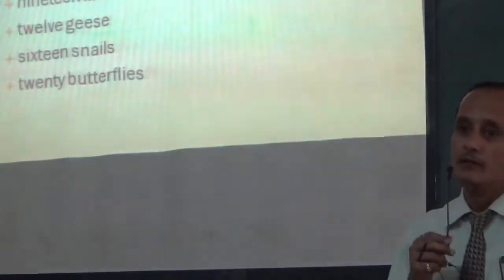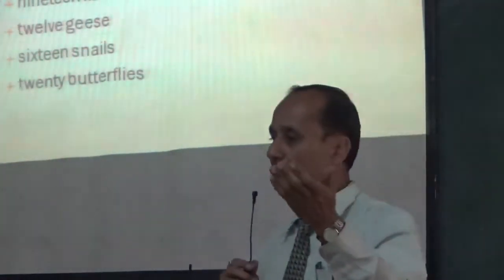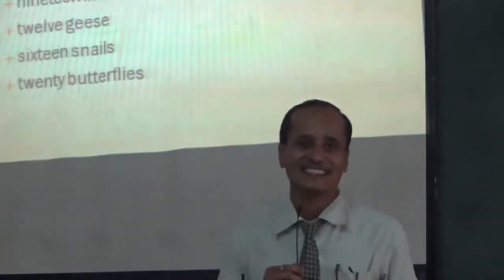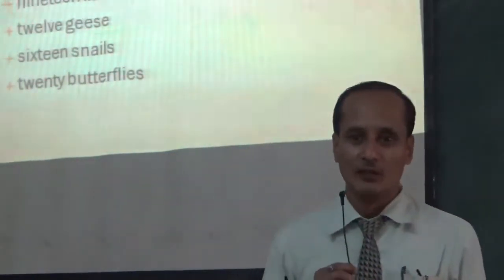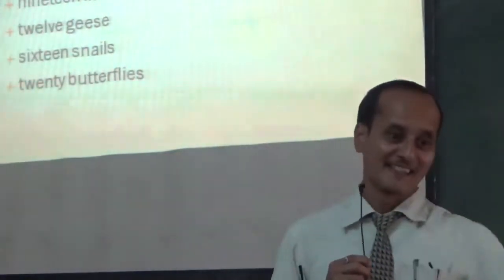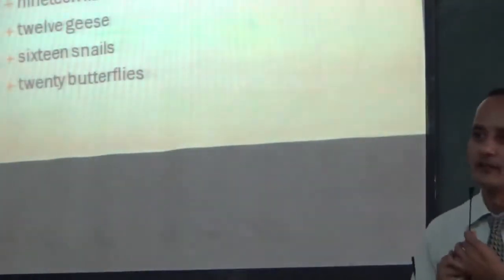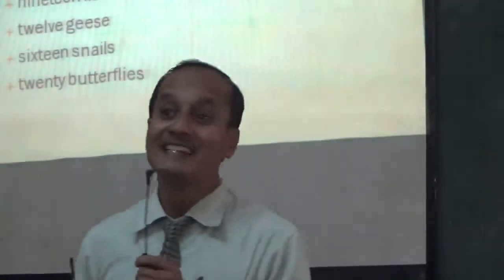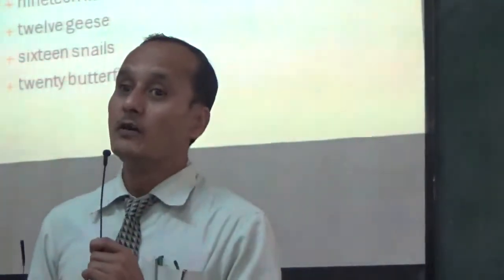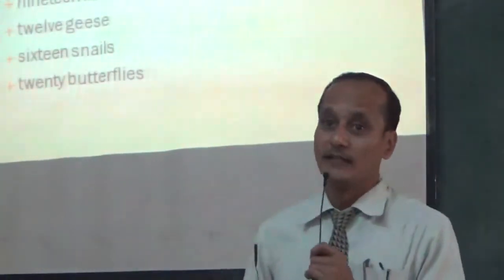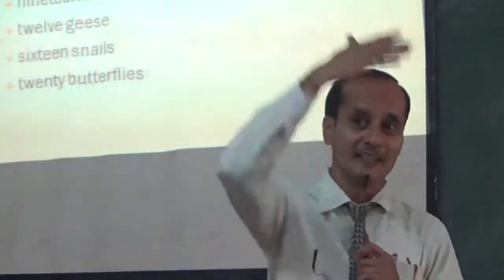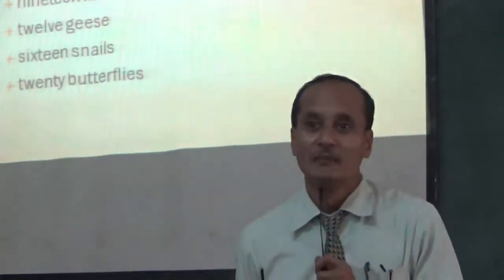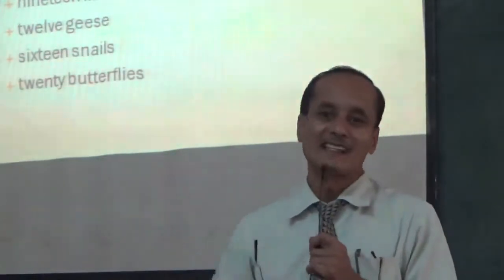So there are some more examples of adjectives of quantity. I have given you local examples: eleven sons, twelve rudras, three goddesses, and there will be 14 lokas — as per our mythology there are 14 lokas. And many more examples you can find. A student suggests: a dozen bananas. Dozen is not exactly a number, but it is still indicating some number, and that slide is coming up next — a dozen bananas.